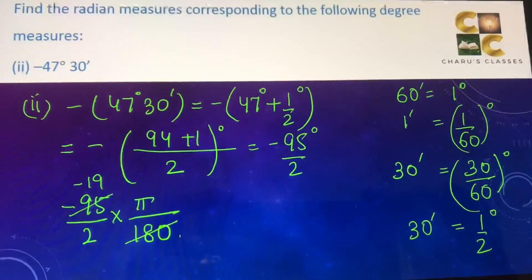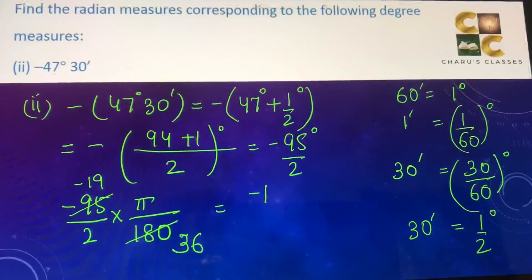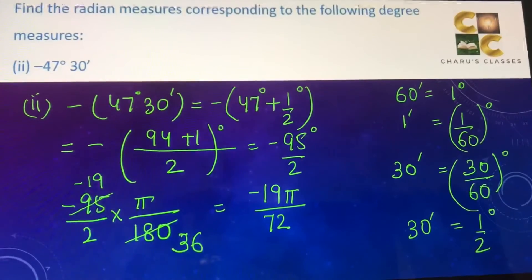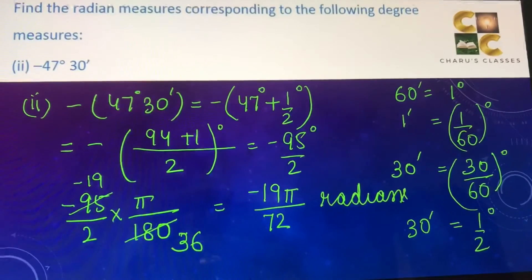So we have minus 19π by 2 into 36, that is 72 radians.